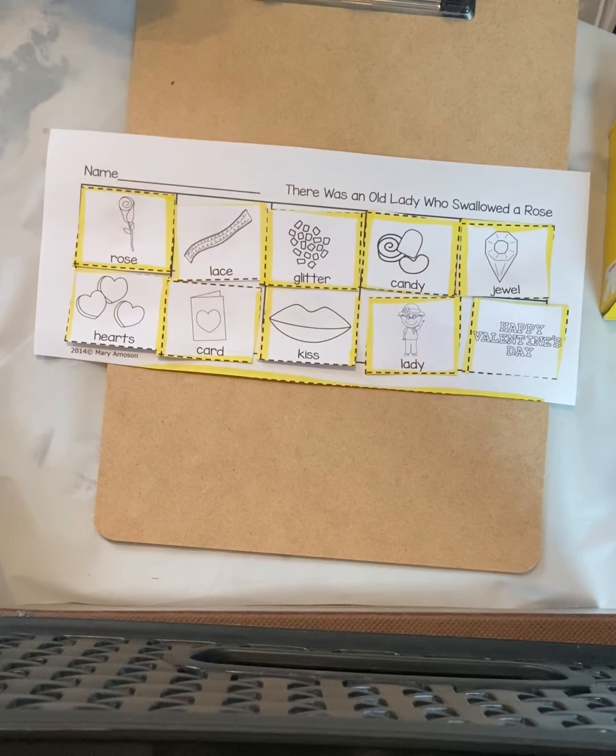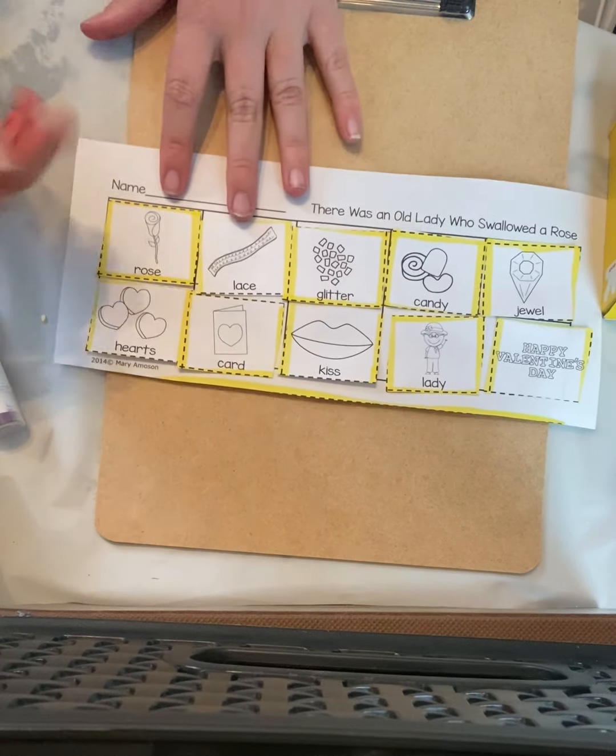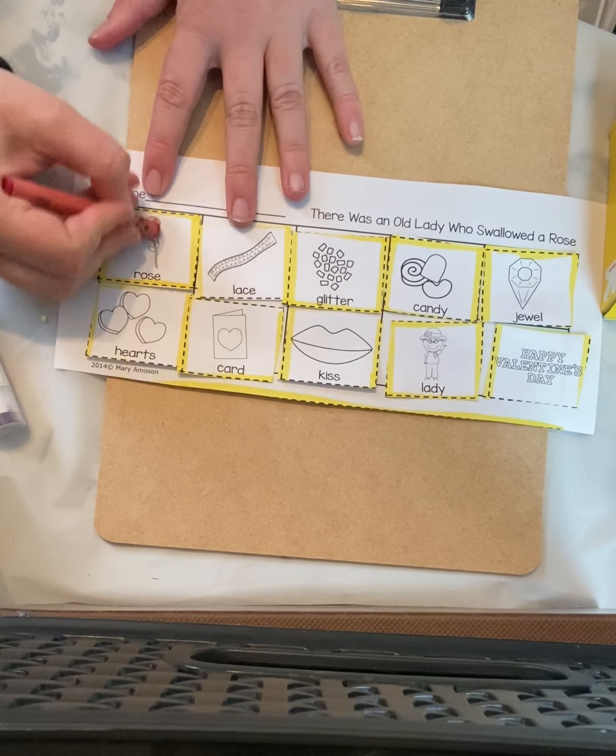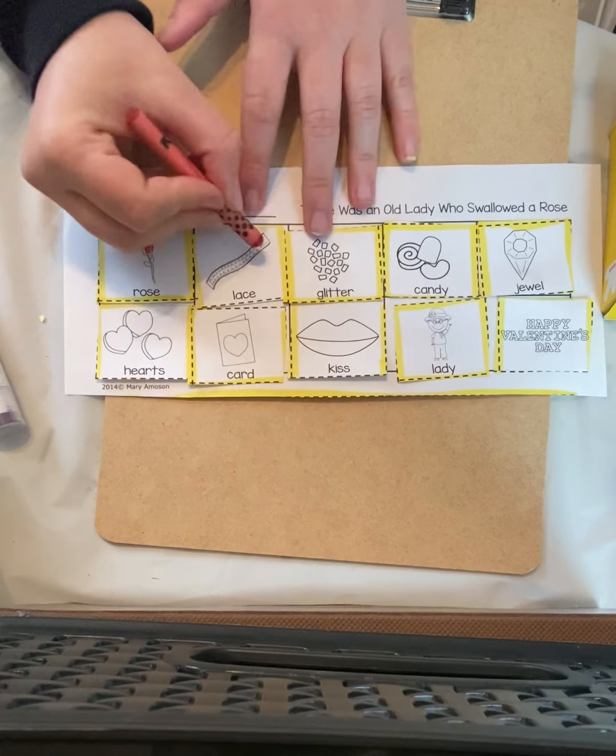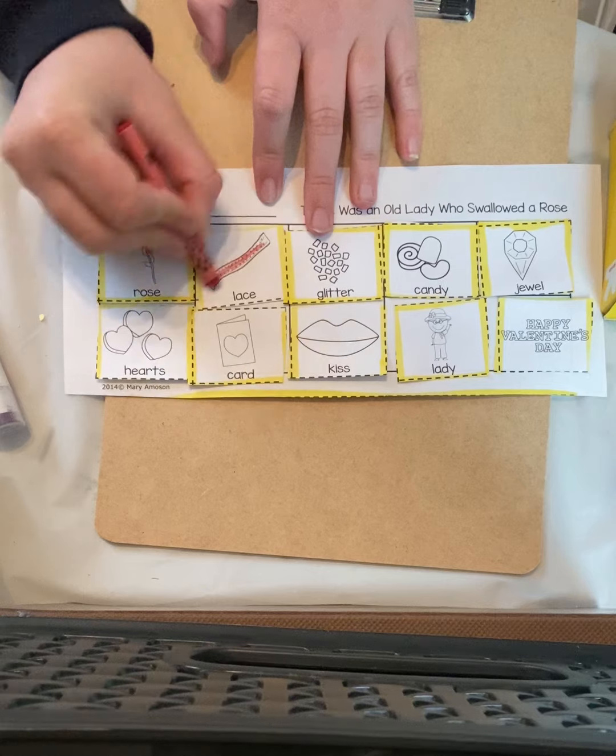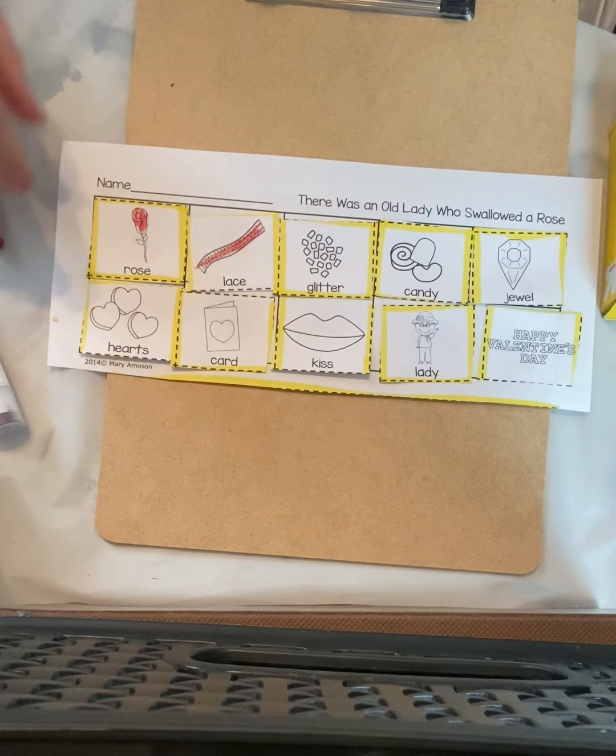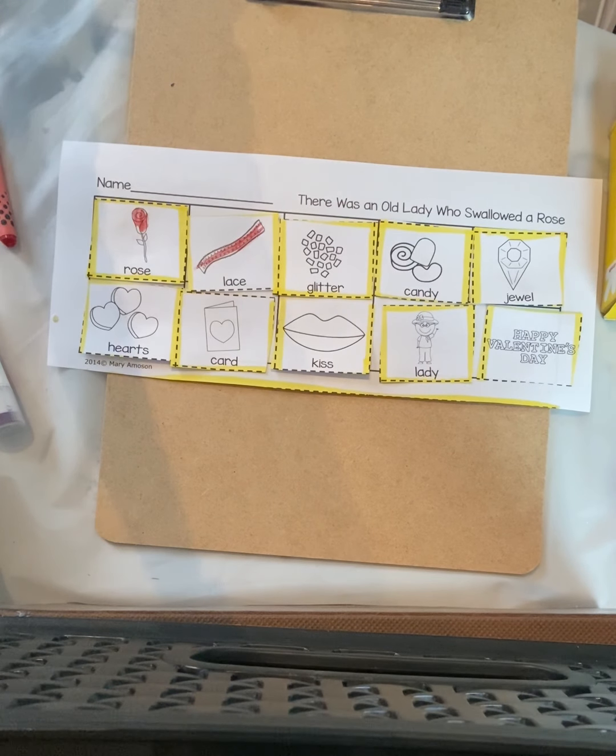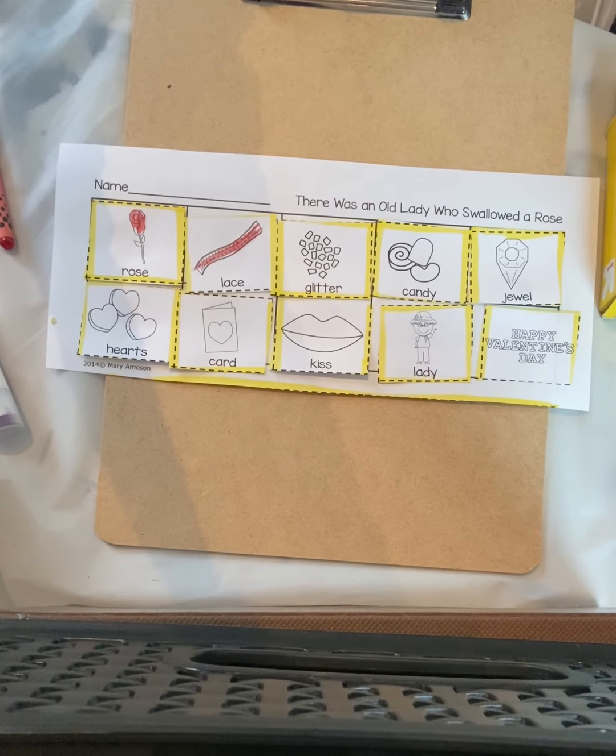And now you can take your crayons and or markers in color. So you can color your rose and the lace and the glitter and all the candy. You can use this to retell the story to your family.